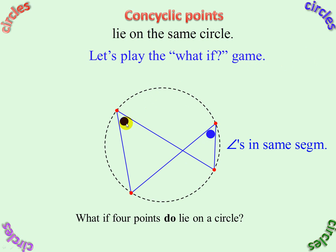Those two angles would have to be equal to one another. So in other words, if we had to prove four points are concyclic — if there was no circle there — if that angle equaled that angle, then these would lie on a circle. And it would be called the converse: Angles in the Same Segment.